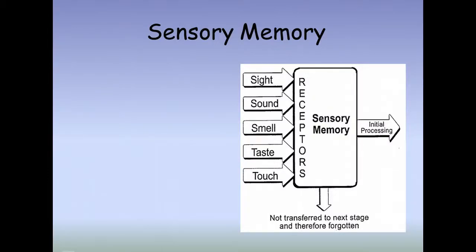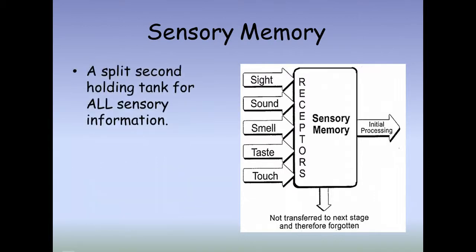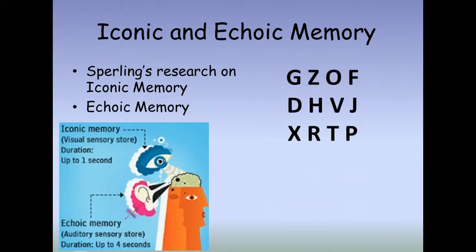Next we will look at sensory memory. Sensory memory is the immediate, very brief recording of sensory information into the memory system. Iconic memory is a momentary sensory memory of visual stimuli — a photographic or picture image lasting no more than a few tenths of a second. The first modern study of iconic memory was performed by George Sperling in 1960. Sperling asked participants to look at a blank screen, onto which he flashed very briefly — about one-twentieth of a second — three rows of four letters each. Most participants named the first four to five letters. Sperling interpreted this to mean each participant had stored an image of the entire set of letters, but by the time they began to read the second row of their mental image, it had disappeared.